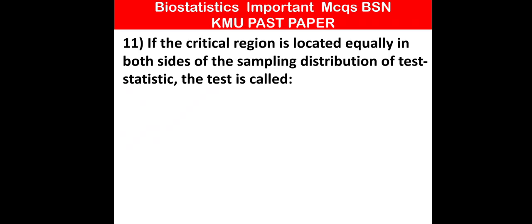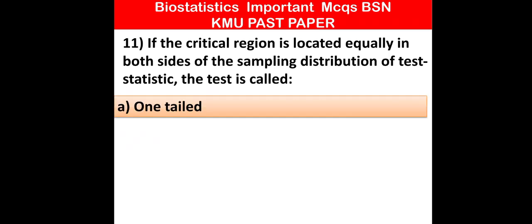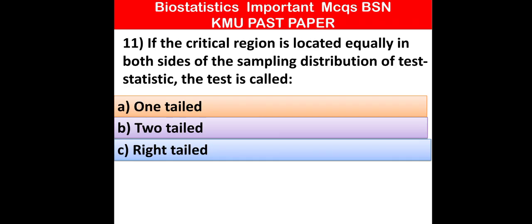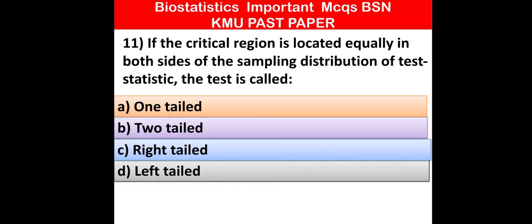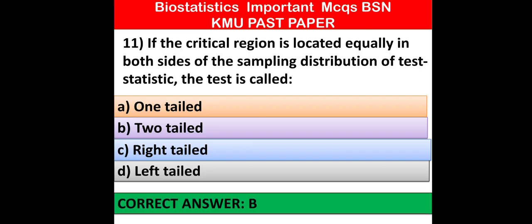MCQ number 11: If the critical region is located equally in both sides of the sampling distribution of the test statistic, the test is called — one tail, two tail, right tail, or left tail. The critical region located equally in both sides — which one of the following is correct? Option B is correct: two-tail test.